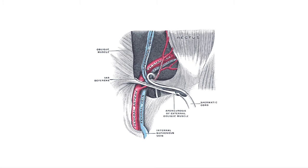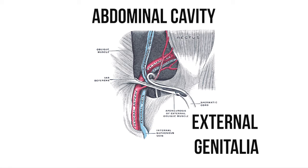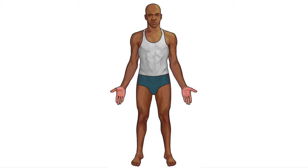The inguinal canal is a path through the anterior abdominal wall that allows structures to move between the abdominal cavity and the external genitalia. Now the abdominal wall is composed of several layers, so to help us visualize it I'm going to imagine we're taking a slice just here and we're looking down at it from above. So we'll have the medial aspect here, the lateral aspect here, with anterior at the bottom of the screen and posterior at the top.